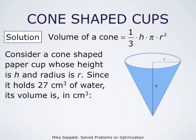We consider a cone-shaped paper cup whose height is h and radius r, and we know that its volume must be 27 cubic centimeters. Therefore we have a relation between h and r: one-third times h times pi times r squared must equal 27.